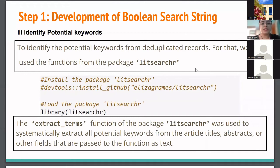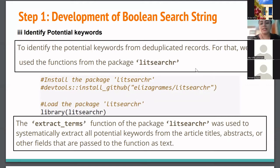The potential keywords from the deduplicated records were identified using a package called litsearchr. This package is not on CRAN but is available on GitHub — it was developed by Eliza Grahams and others. The extract_terms function in this package was used to systematically extract all potential keywords from article titles, abstracts, and other fields passed to the function as text. I've provided a link to the GitHub repository at the end.